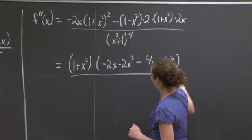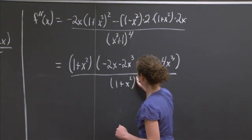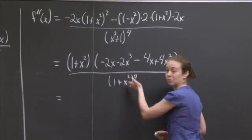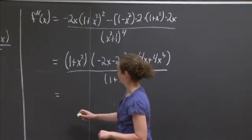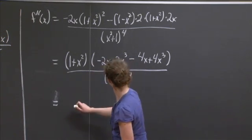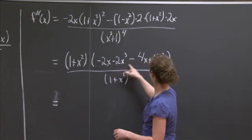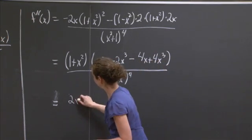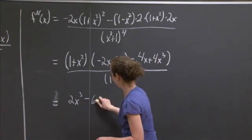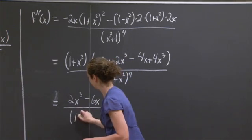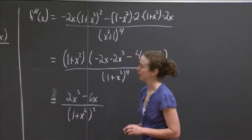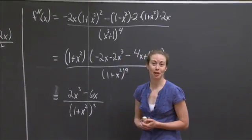Now I'm going to pull out a 1 plus x squared from the numerator to simplify. After simplifying, the numerator becomes 2x cubed minus 6x, divided by 1 plus x squared to the third. So these were some tools that we needed; now we're going to try and use them.